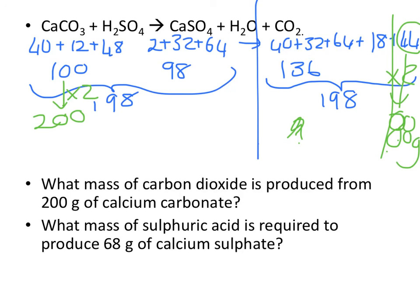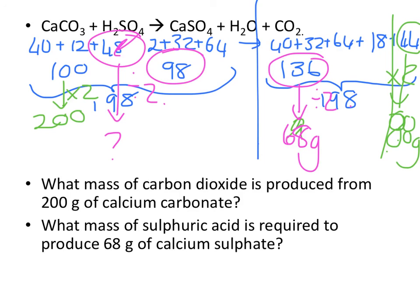What mass of sulfuric acid is required to produce 68 grams of calcium sulfate? So what did I do to 136 to make it 68? I divide it by 2. So what do I do to 98? Divide that by 2 and I land up with 49 grams of sulfuric acid.